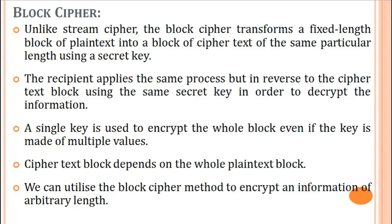For example, if the size of the plain text message is a 6-bit block, then the key size is also a 6-bit block. The encryption operation is performed on the 6-bit plain text with the 6-bit key, and then we get a 6-bit block of cipher text. So the cipher text block size depends on the block size of the key and plain text. Hill cipher and playfair ciphers are also types of block ciphers.